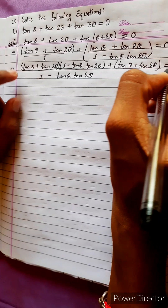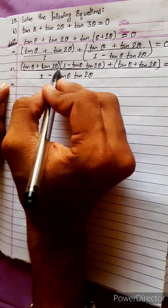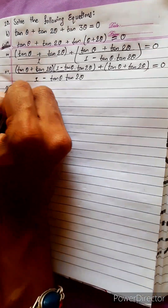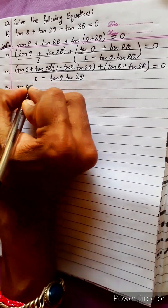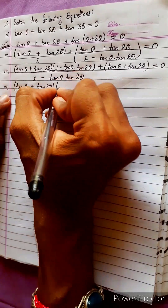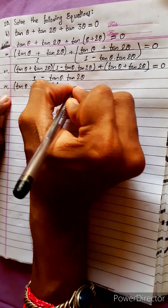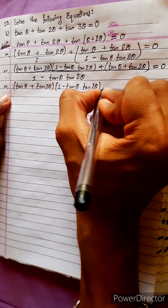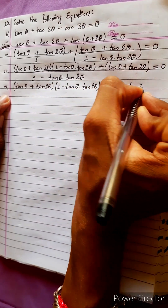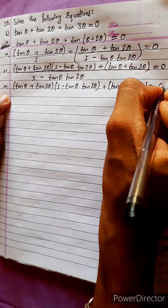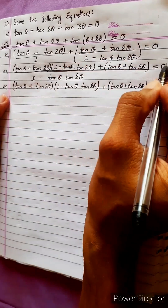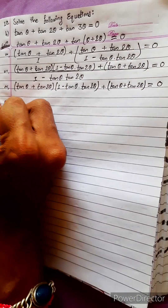After that, we can send this to another side and remove. Multiply with zero — now we will have tan θ plus tan 2θ, multiplied with 1 minus tan θ into tan 2θ, plus — copy as it is — tan θ plus tan 2θ equals to zero. Multiply by the denominator, it will be zero; take to another side and remove this.